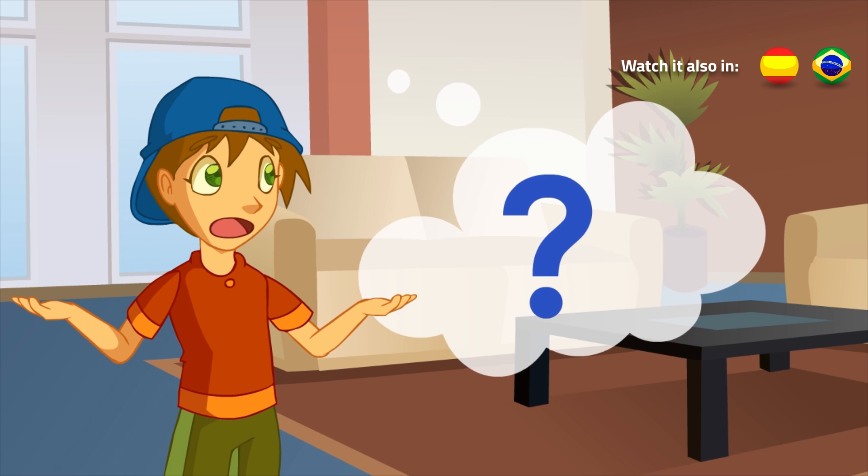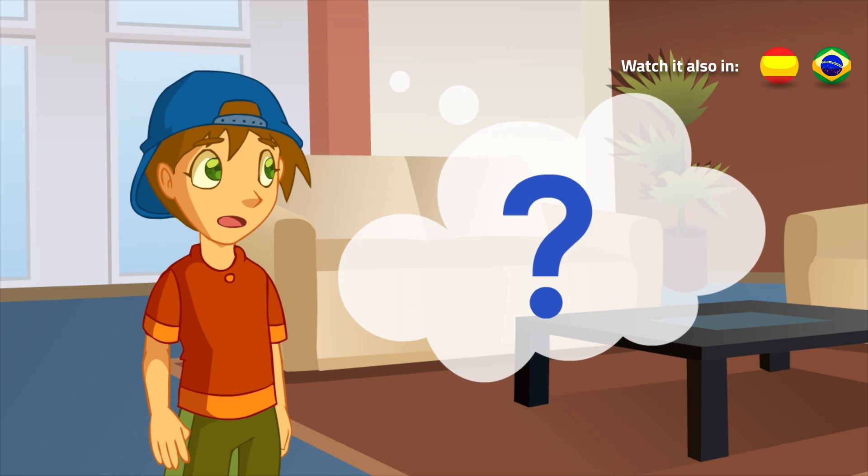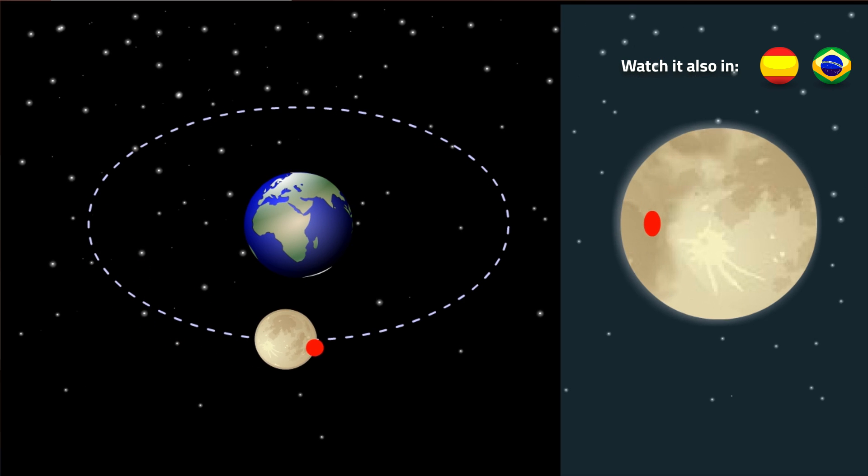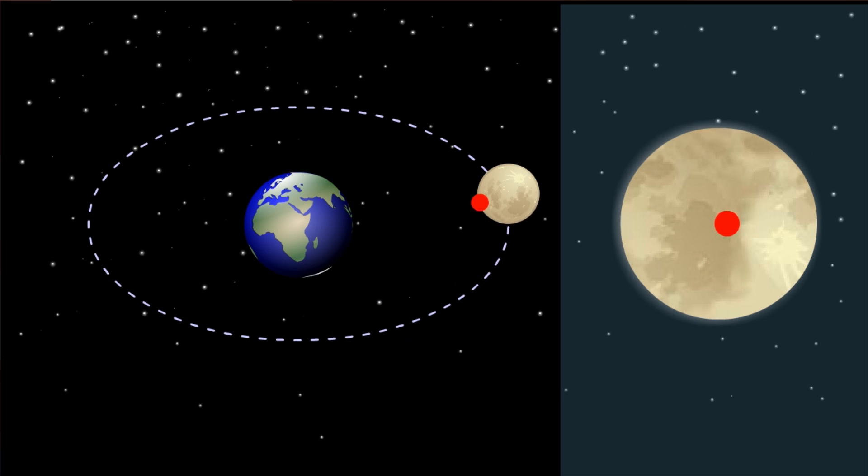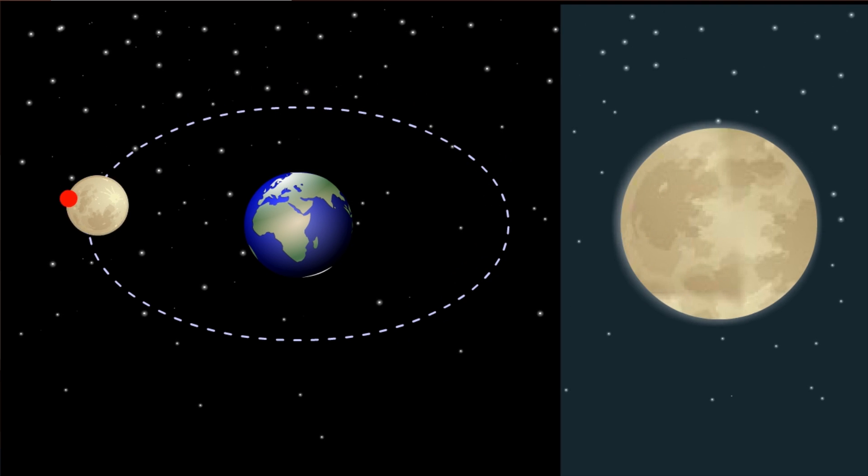What if the Moon spun around itself faster or slower than the time it takes to revolve around the Earth? In that case, we'd be able to see the other side. That is, the dot would move from our view.